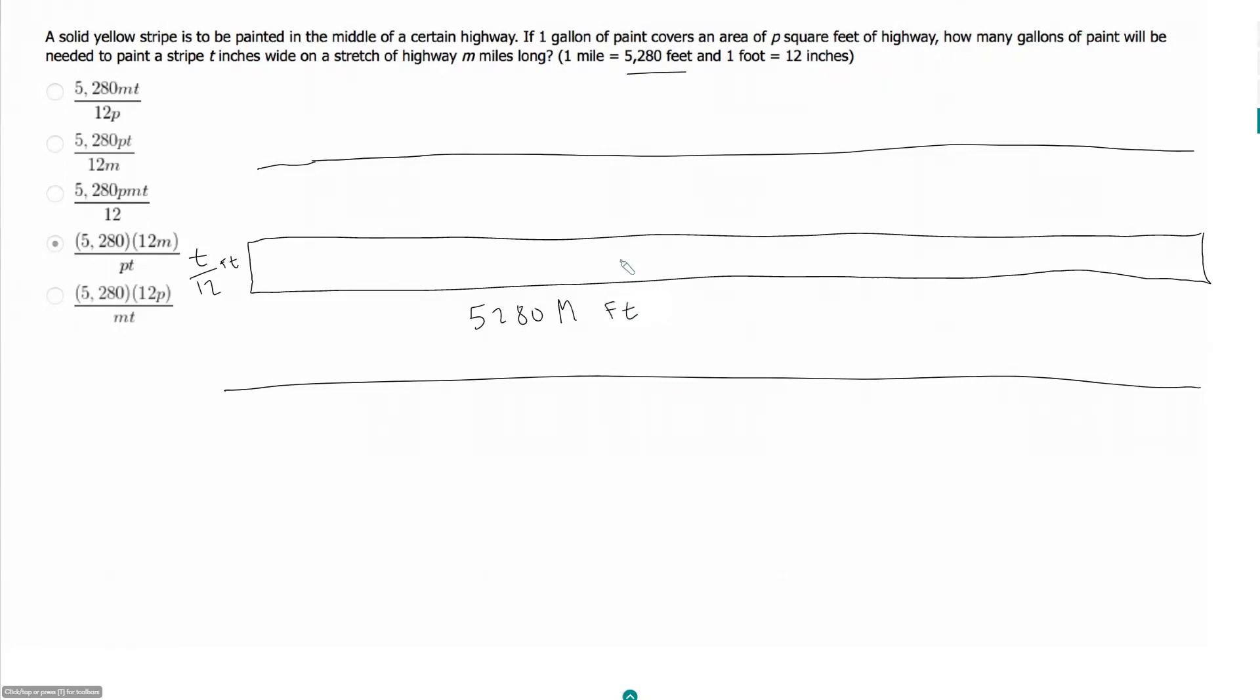So if I want to find the area of my stripe, it should be just length times width, 5,280 m times t over 12, which gives me 5,280 mt over 12. And so it's 5,280 mt over 12 square feet.